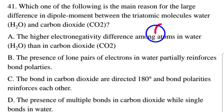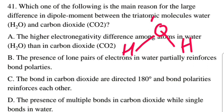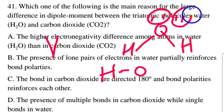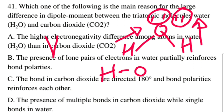For H₂O, the central atom is oxygen. The oxygen central atom has two lone pair electrons. H₂O is a polar bond molecule. H₂O has a V-shape molecular geometry. The presence of lone pair electrons around the central atom O causes a V-shape. The two bond moments in H₂O do not cancel each other.